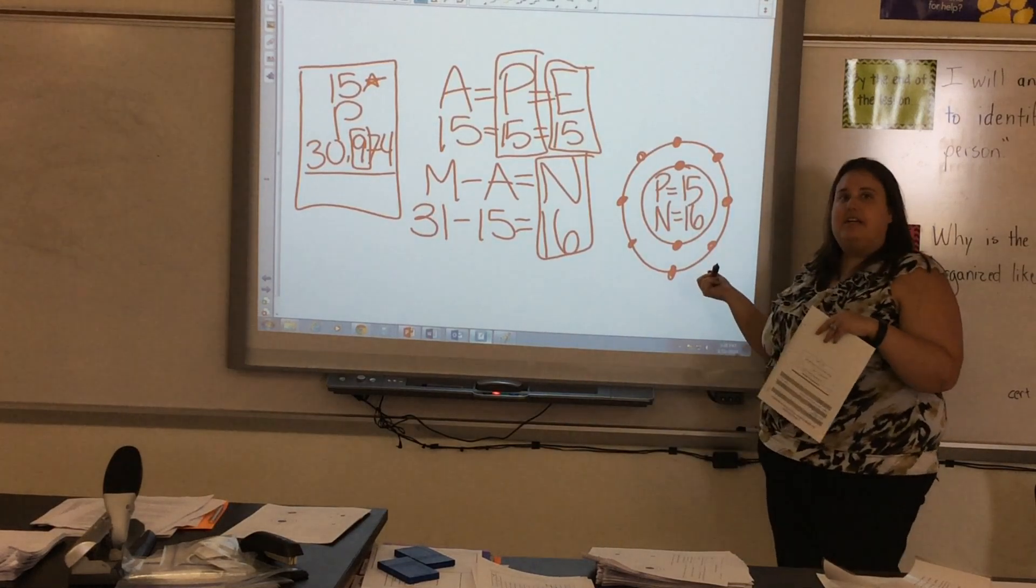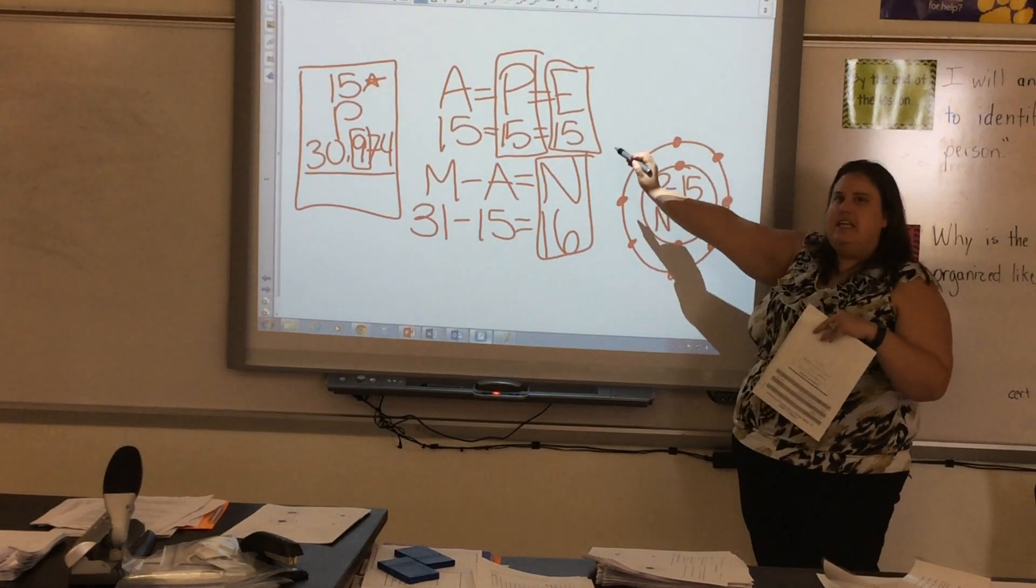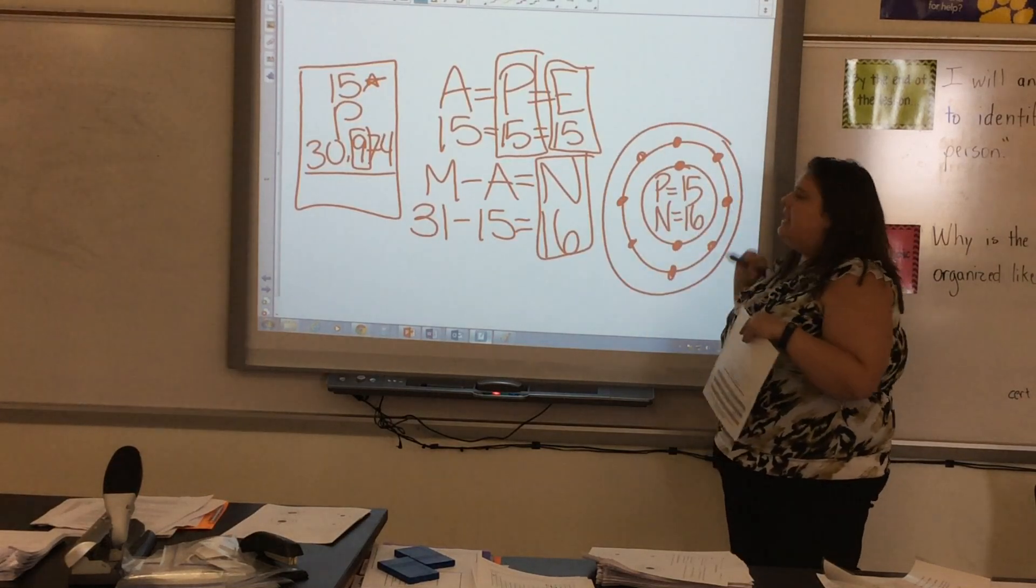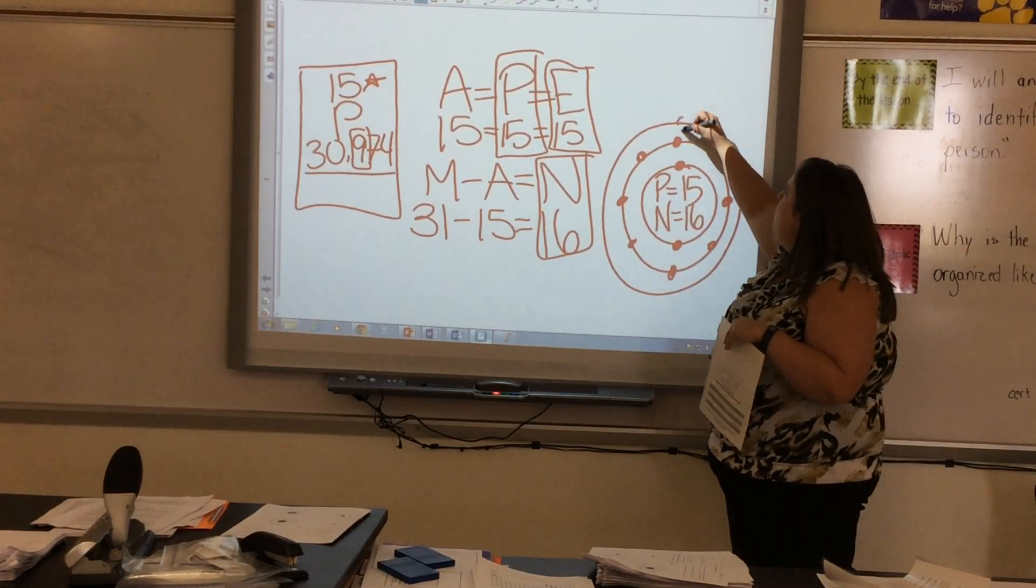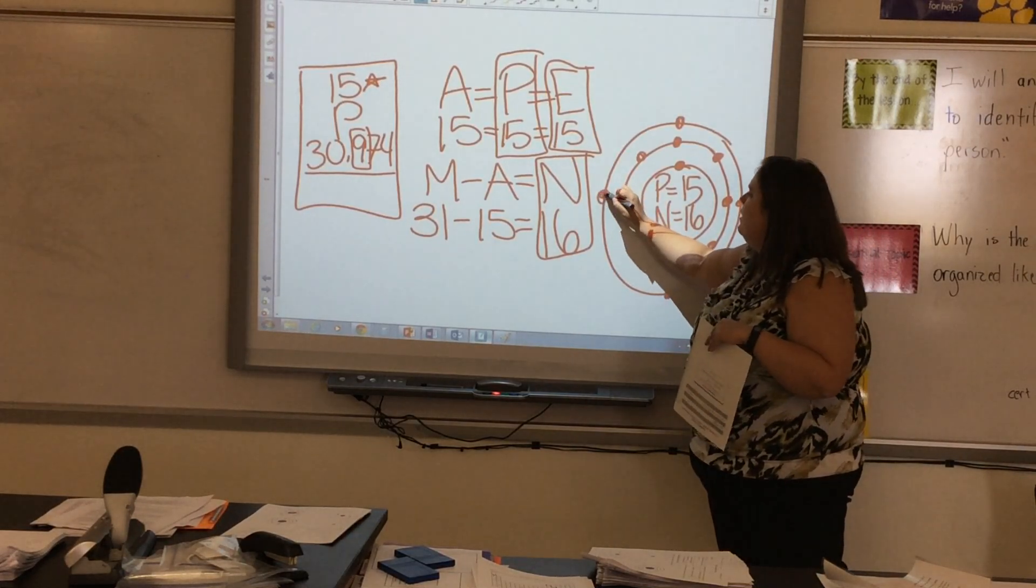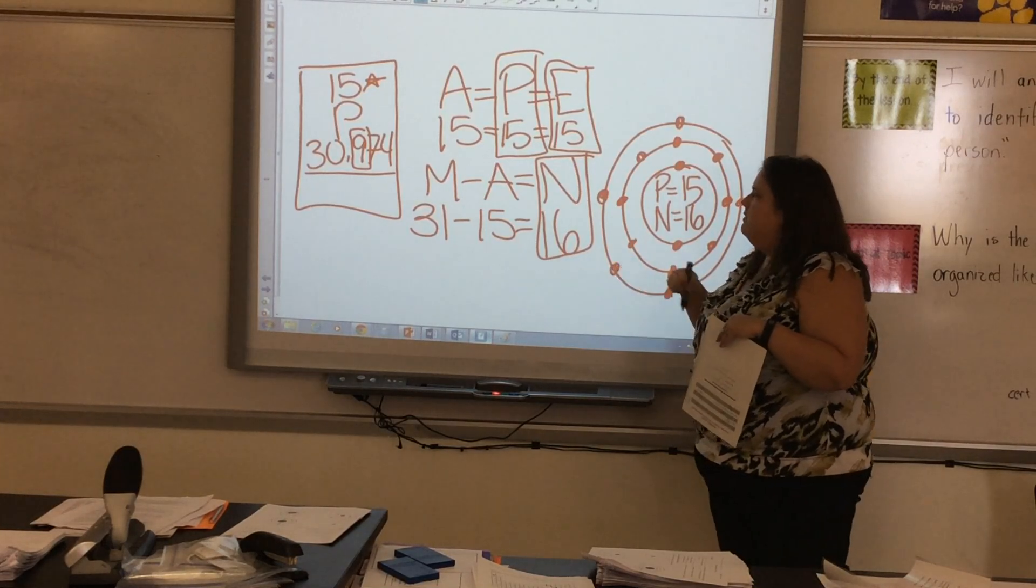I currently have 10 electrons. So if I need 15, I know that I have to have a third ring. And I need 5 more. So 1, 2, 3, 4, 5. Okay.